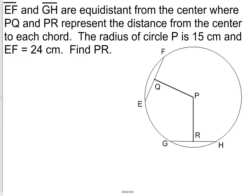The first part here, it says EF and GH are equidistant to the center, and PQ and PR represent the distance from the center. We should put that information on here. First off, EF is 24, but that means we can divide this into a 12 and 12.